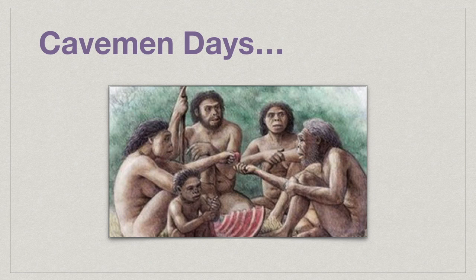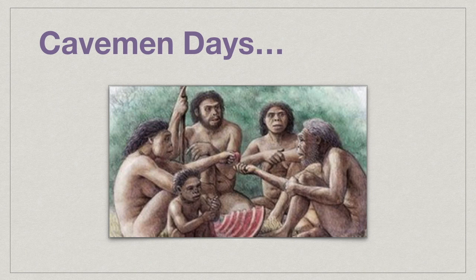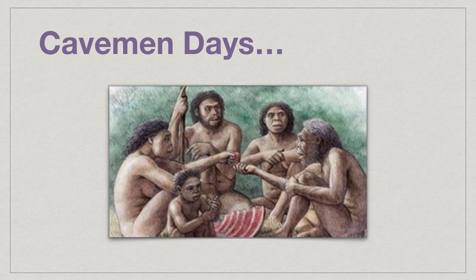To really explain things, I want to take you all the way back to caveman days. Humans were developing language and were suddenly able to describe our surroundings. We were also able to pass on our knowledge to other people and other generations within our tribe. If I discovered fire, I could teach you how to make fire. If I found out that this plant was good and this one was poisonous, I could share that information. As cavemen, we were trying to make sense of our surroundings, and so we started to categorize things.